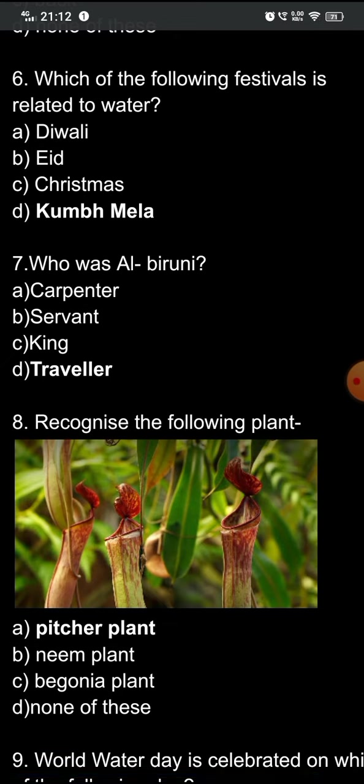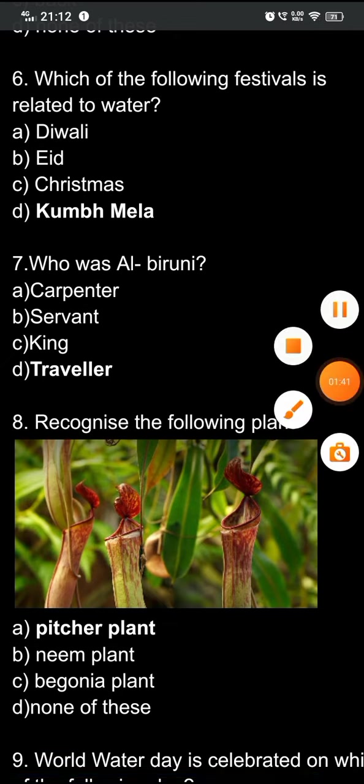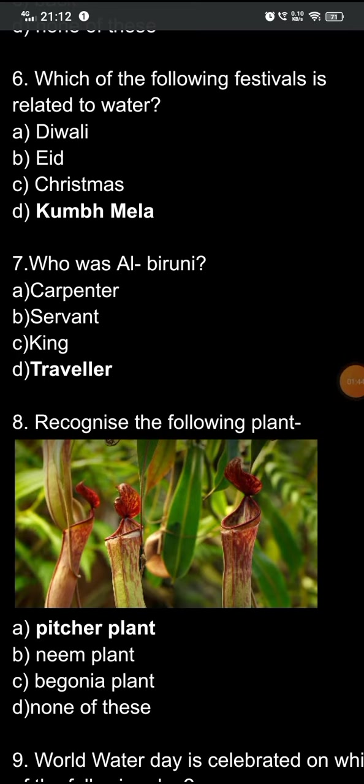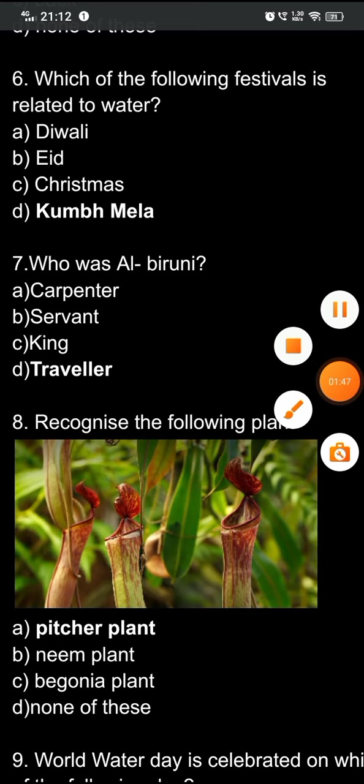Question eight is about identifying a plant. The options are: A) picture plant, B) name plant, C) Begonia plant, D) none of these. The correct option is A — the picture plant.